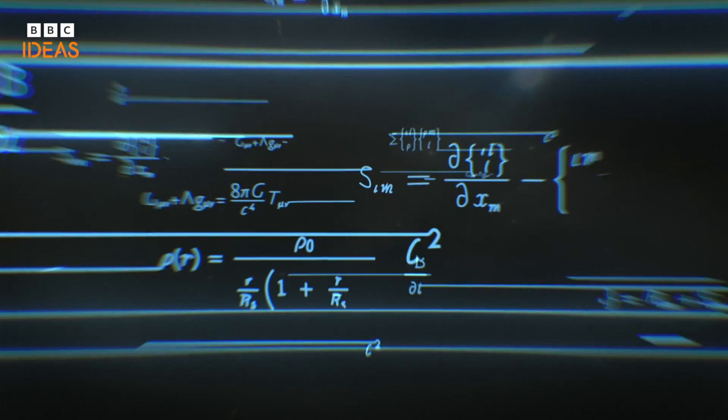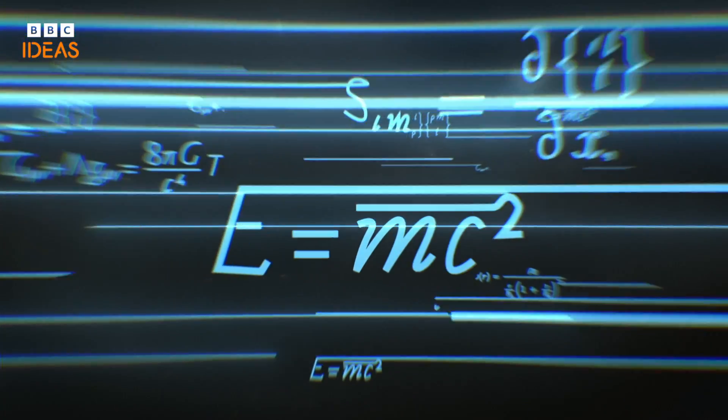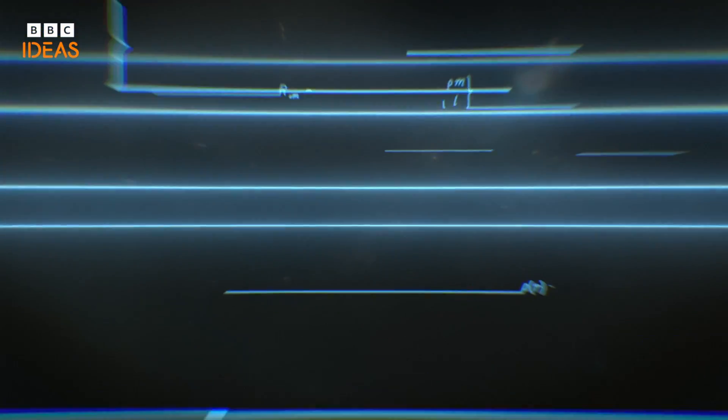If you look at the equations of physics, it's striking that time can go forwards or backwards. The equations of physics don't distinguish.